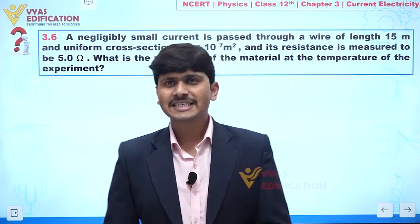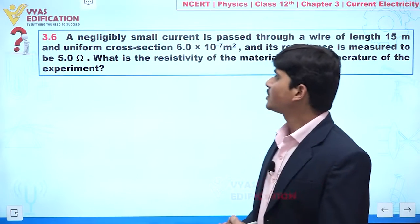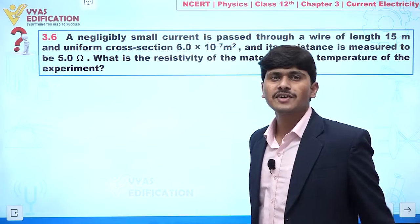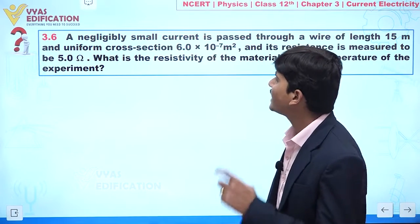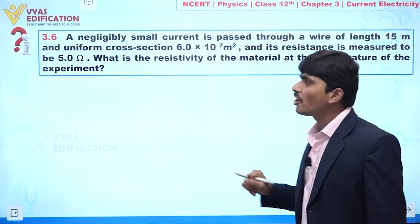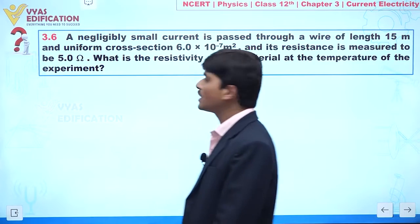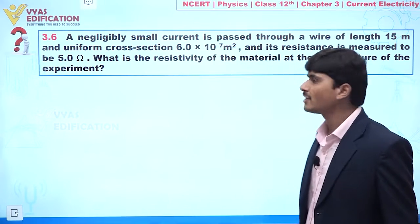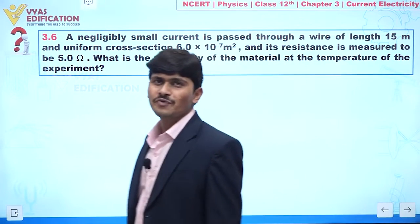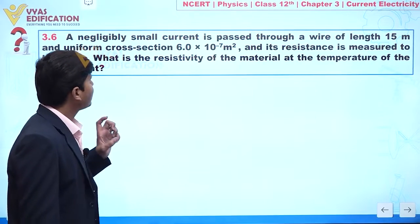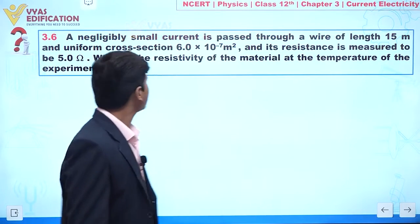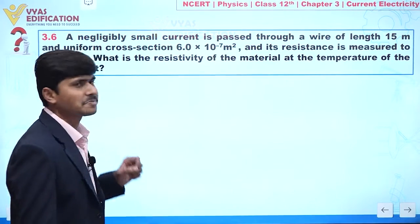We are going to discuss question number 3.6. In this question, a negligibly small current is passed through a wire of given length and uniform cross-sectional area, and the resistance is measured to be 5 ohm. What is the resistivity of the material at the temperature of this experiment?